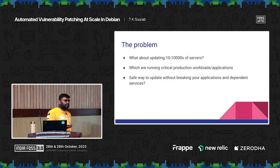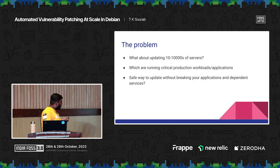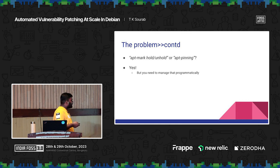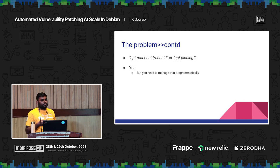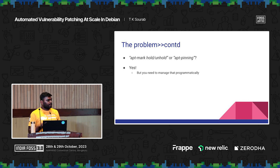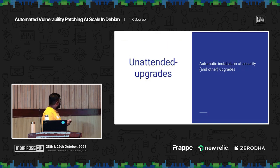If you update a certain package, you will have dependent services which are still using the old binary. You can look at this information using lsof and similar commands. What about apt-mark, which is a way to hold or pin your packages? This works, but you need to manage that programmatically — some user has to go and manage the pinning so the packages stay at a particular version, and then once it's safe, unmark and update.